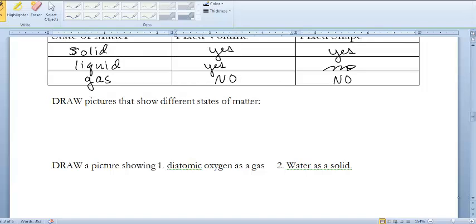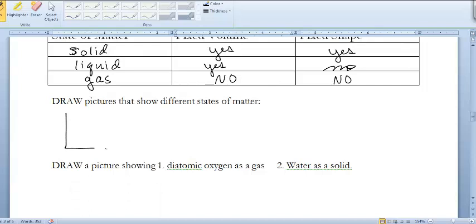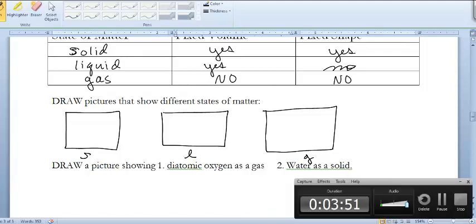What I'd like you to do is draw the three different states of matter in a little box. I'm going to draw what these three states of matter would look like: solid, liquid, and gas. Let me pause the video and fill in my picture.